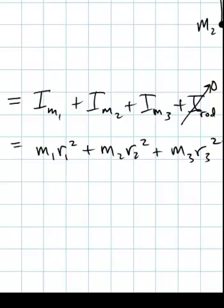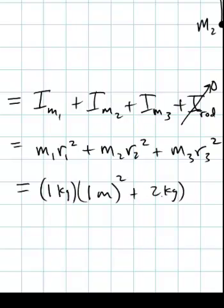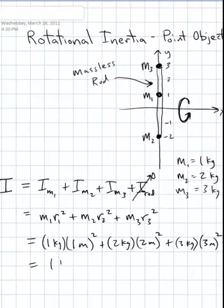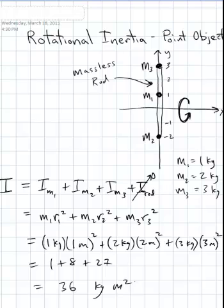So there's our equation. Let's go ahead and plug in some numbers. We're given the masses are one, two, and three kilograms. So our one kilogram mass is a distance of one meter away from the axis of rotation. The two kilogram mass is two meters away, and the three kilogram mass is three meters away. How convenient. So we get one plus eight plus 27, which is 36 kilogram meters squared.